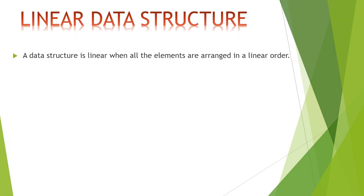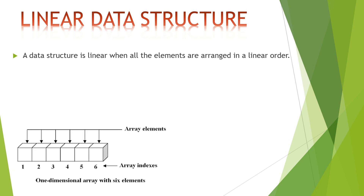A data structure is linear when all the elements are arranged in a linear order, that is in sequential order. For example, take array. Arrays are homogeneous and contiguous collections of same types. They have a static memory allocation technique, which means if memory is allocated once, it cannot be changed during runtime. Arrays are also used to implement vectors, matrices and other data structures. If we do not know the memory to be allocated in advance, then array can lead to wastage of memory. Also, insertions and deletions are complex in arrays since elements are stored in consecutive memory locations.